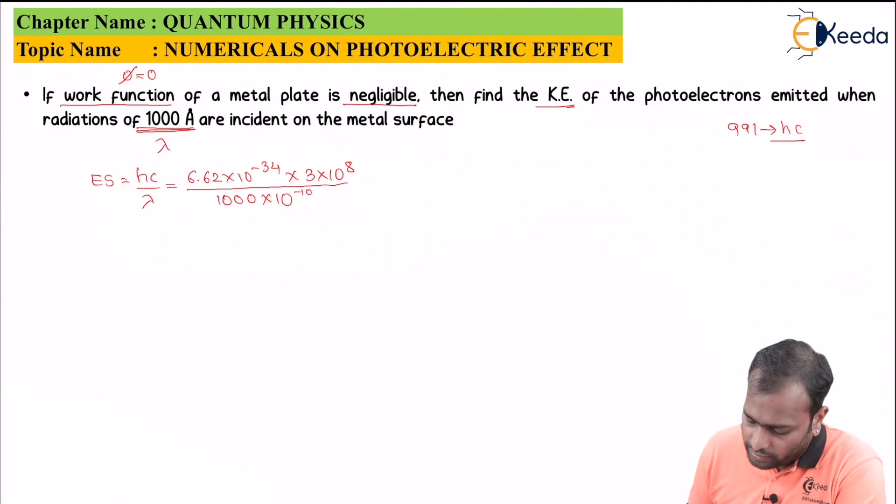On solving this we will be getting approximately 19.86 into 10 to the power minus 16. Now remember this value is in joules because we have taken the SI unit of h, c and lambda.